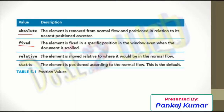When you make it fixed, the meaning is simple: the element is fixed. When the document is scrolled, you will still be able to see the element; otherwise you cannot. Next, relative: the element is moved relative to where it would be in the normal flow. And static: the element is positioned according to the normal flow, and by default static is applied. You can change it accordingly whenever you want.